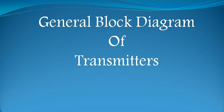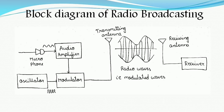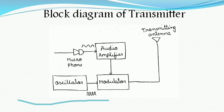Let us consider a simple block diagram of a radio broadcasting system. The radio broadcasting system consists of mainly three blocks: one is the transmitter part, second one is the channel through which the modulated waves are transmitted, and the third one is the receiver part in which the original message signal is recovered. The main purpose of the transmitter is to produce the radio waves or modulated waves and also to transmit these modulated waves through the channel using the transmitting antenna.